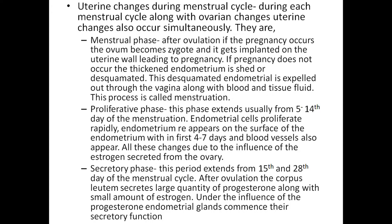Uterine changes during the menstrual cycle occur simultaneously with ovarian changes. The first uterine phase is the menstrual phase. After ovulation, if pregnancy occurs, the ovum gets implanted on the uterine wall. If pregnancy does not occur, the thickened endometrium is shed. This shed endometrium is expelled through the vagina along with blood and tissue fluid — a process known as menstruation.